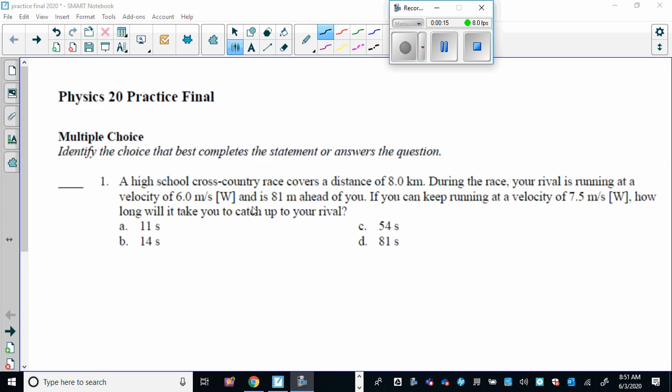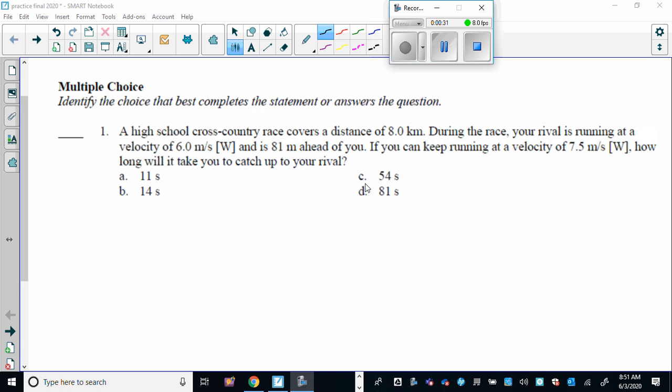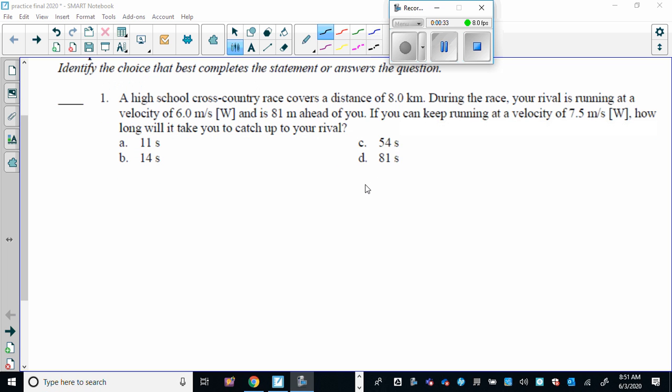A high school cross-country race covers a distance of 8 kilometers. During the race, your rival is running at a velocity of 6 meters per second west and is 81 meters ahead of you. If you keep running at a velocity of 7.5, how long will it take you to catch up to your rival? Questions like this, always good to draw a little sketch.